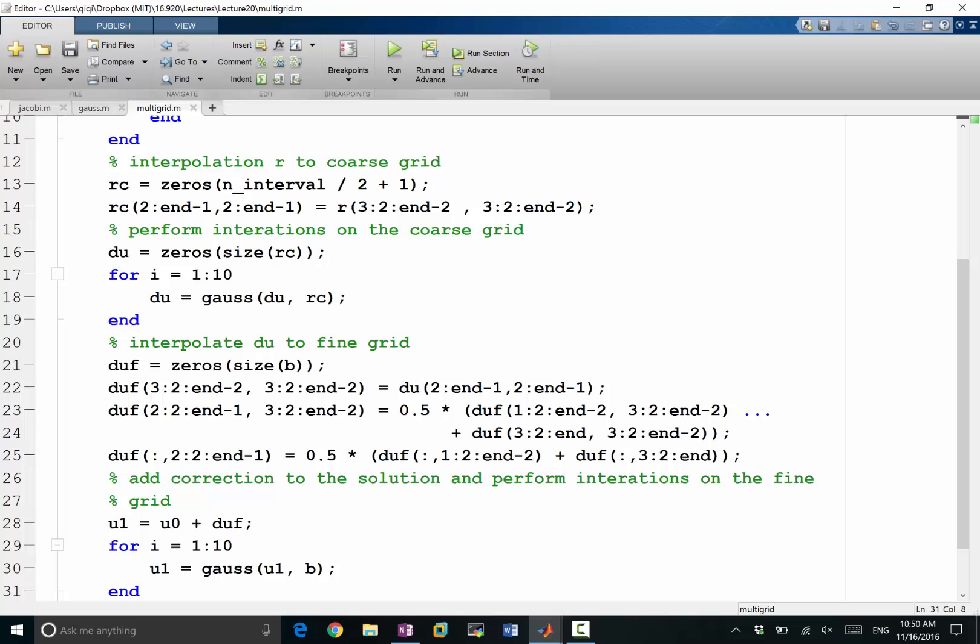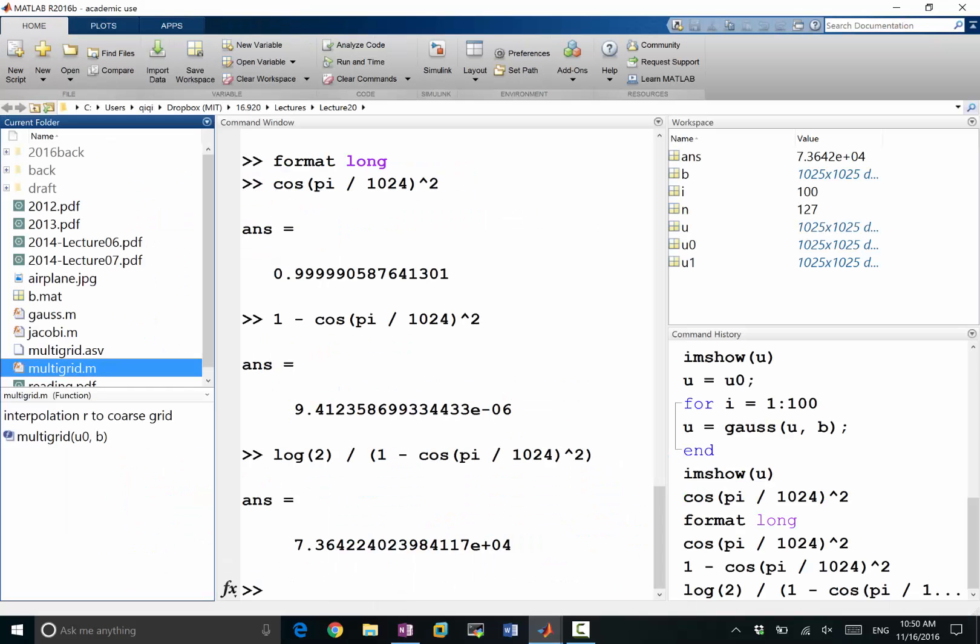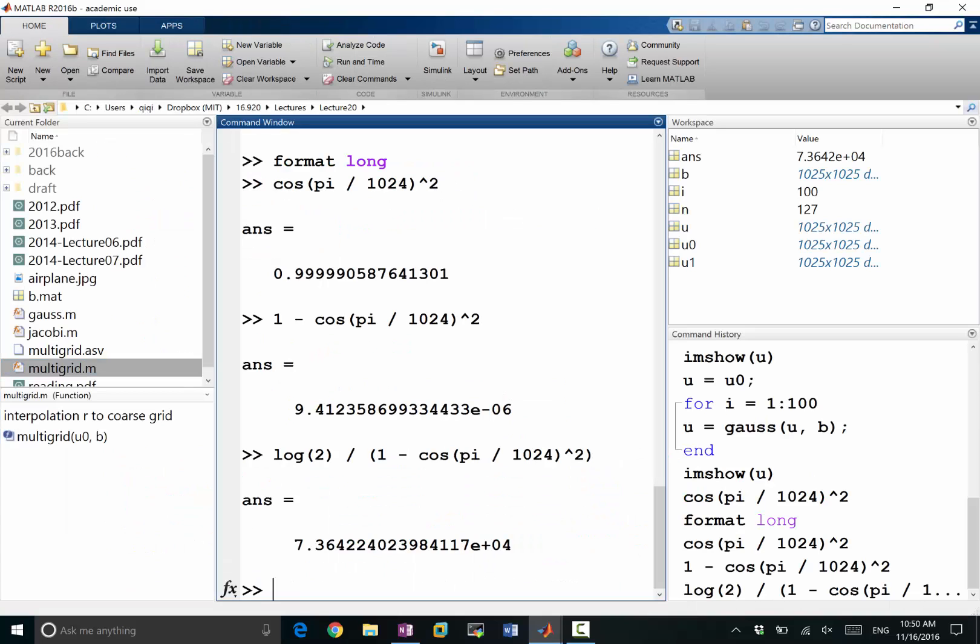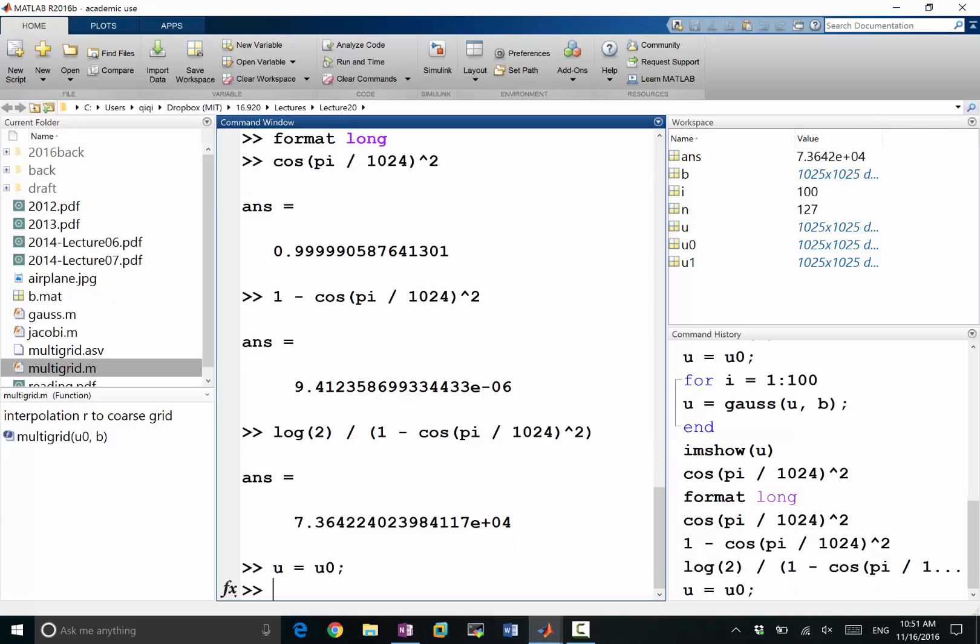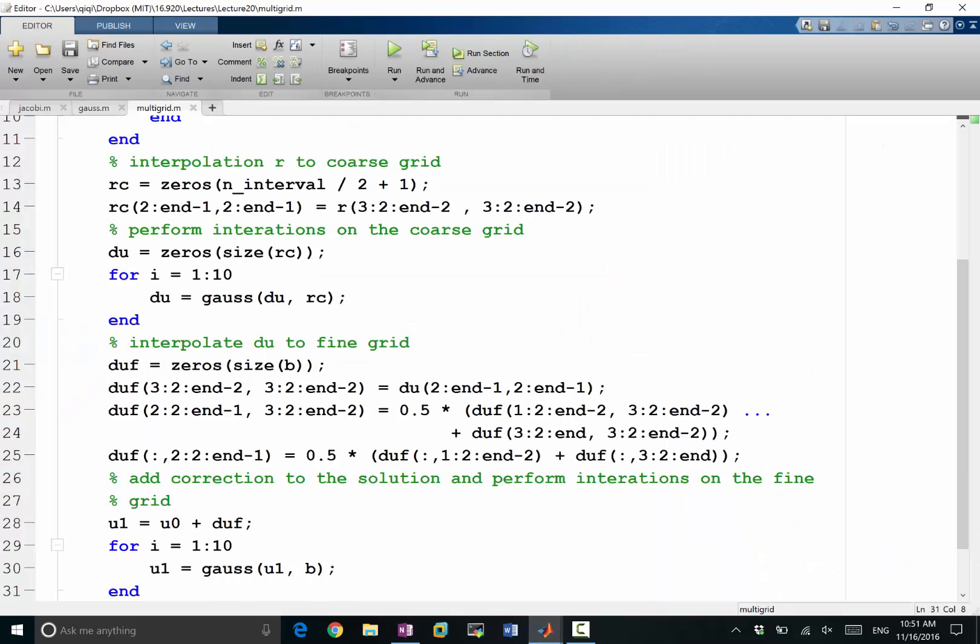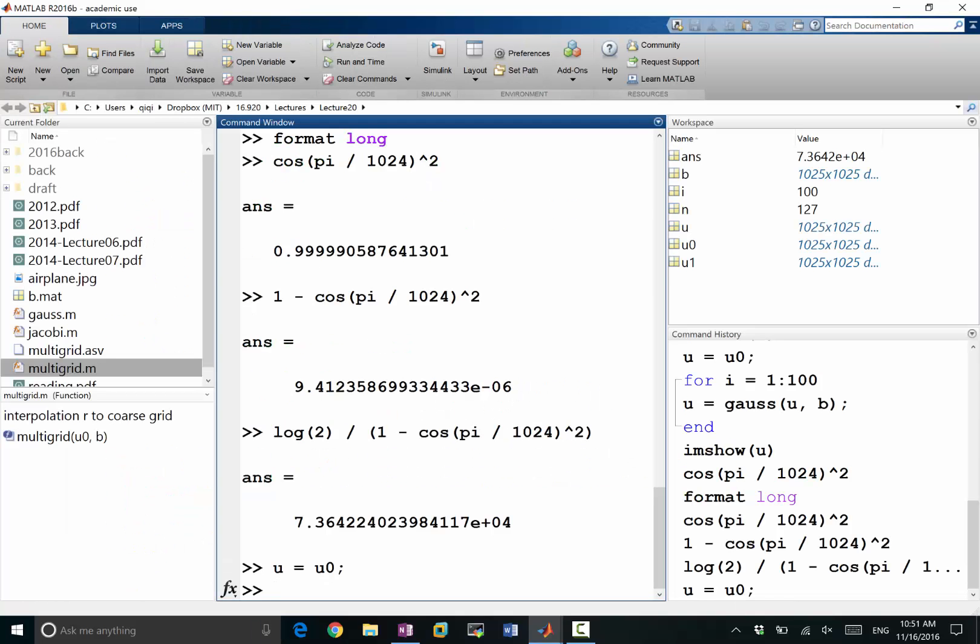All right, so let's try it. If we see we have our, let's again make u equal to u0. Previously we performed 100 iterations of Gauss-Seidel and we saw what we had, right? So in here because we have 20 iterations on the coarse grid, 20 iterations on the fine grid, so let's only do 5 iterations.